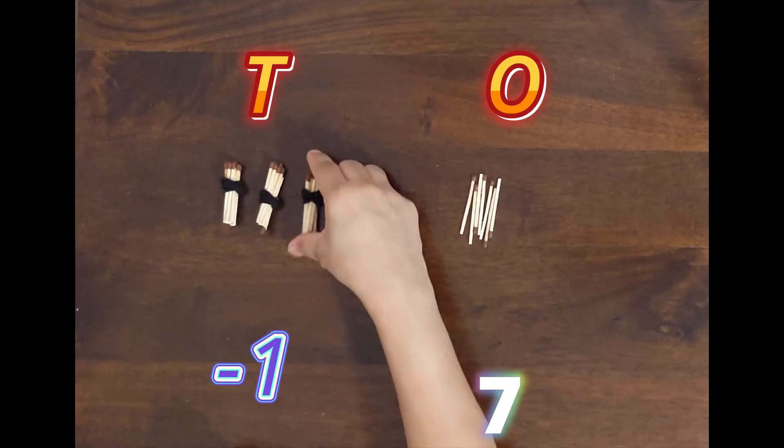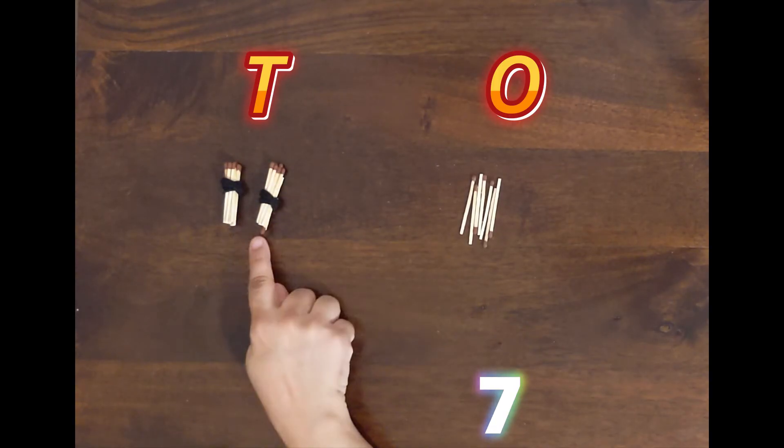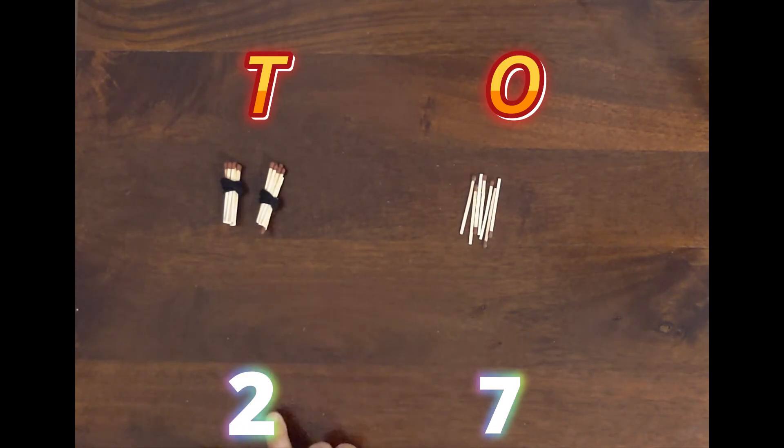Now in the tens place, we'll take away 1 ten from 3 tens. How many tens are left now? 2. So the answer is 27.